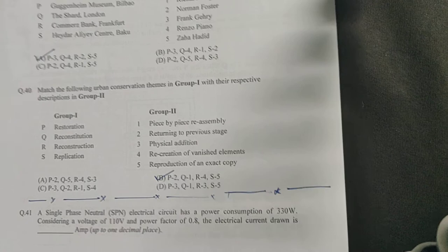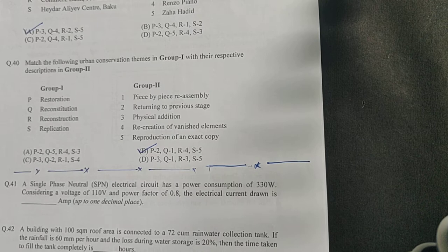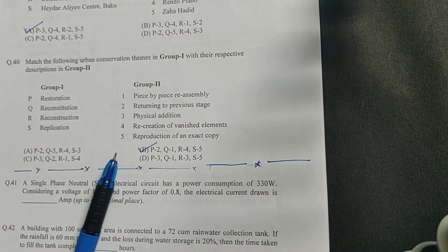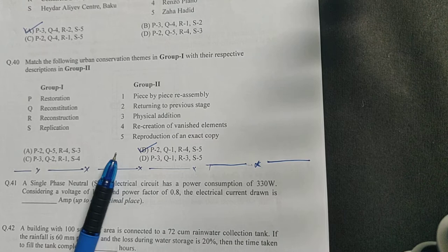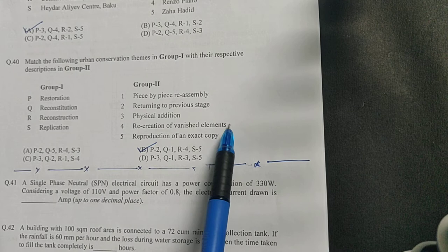The last question for today. You have different conservation techniques given and what they signify. What does restoration mean? Restoration means you try to conserve the building. You try to keep the building in its initial phase or its previous stage. That's why it's returning to the previous stage. Next is reconstitution.